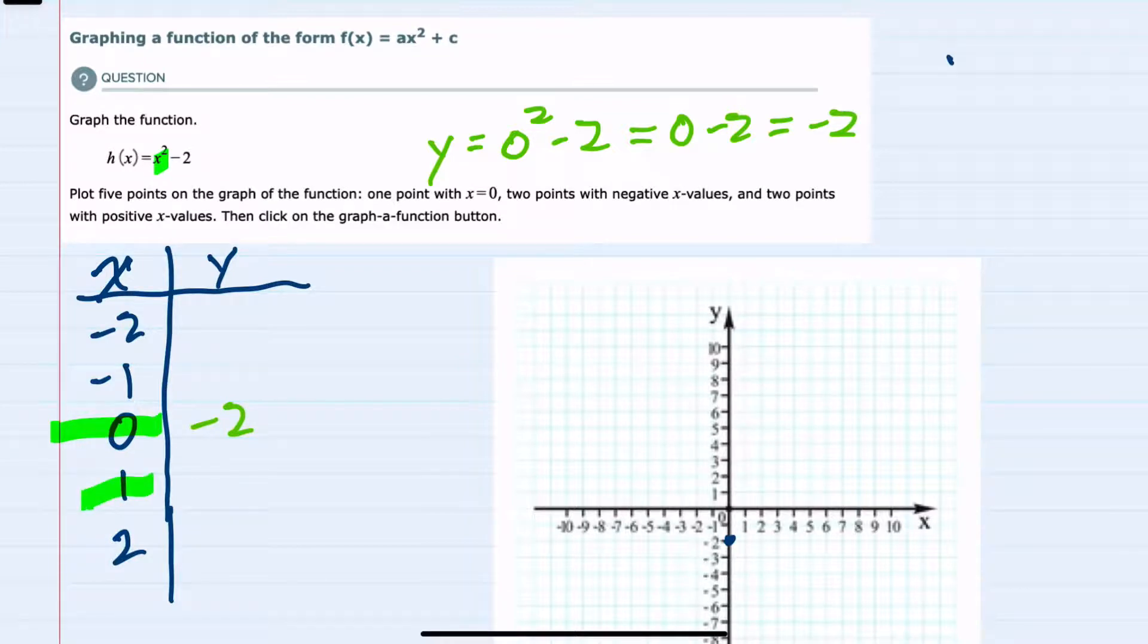I'll do 1 next, and h of 1 would give us a y value of replacing x with 1: 1 squared minus 2. Doing the exponents first, 1 squared is 1 minus 2, so this would be a negative 1 y value. So we have the coordinate 1, negative 1, which is here. And then moving on to x equals 2.